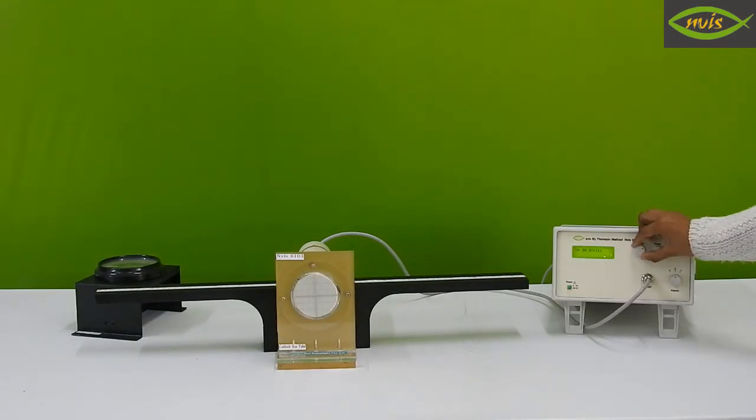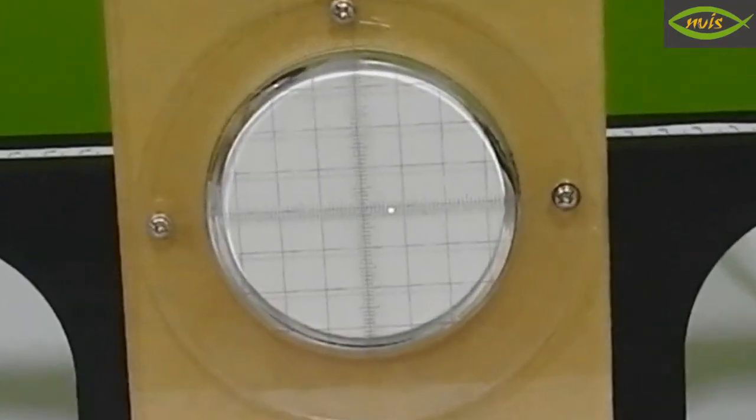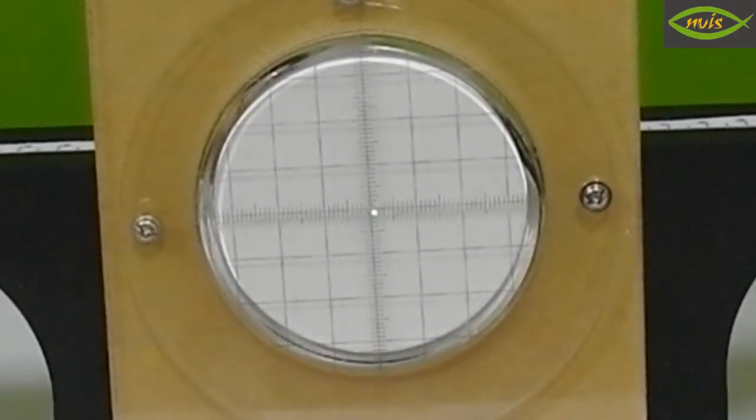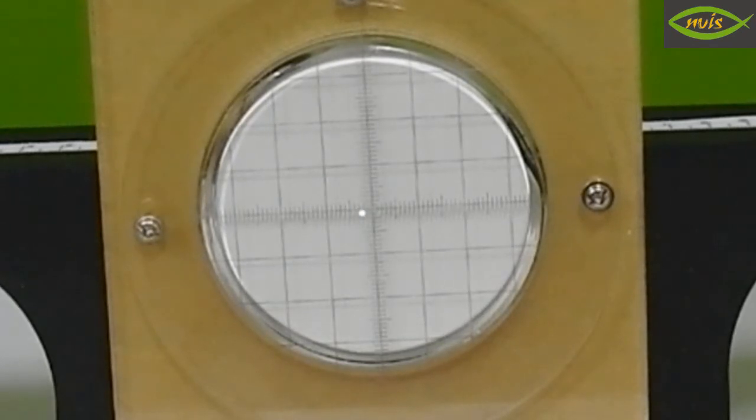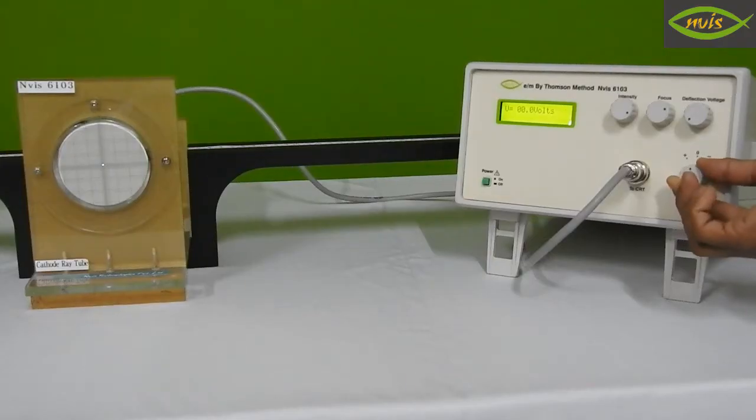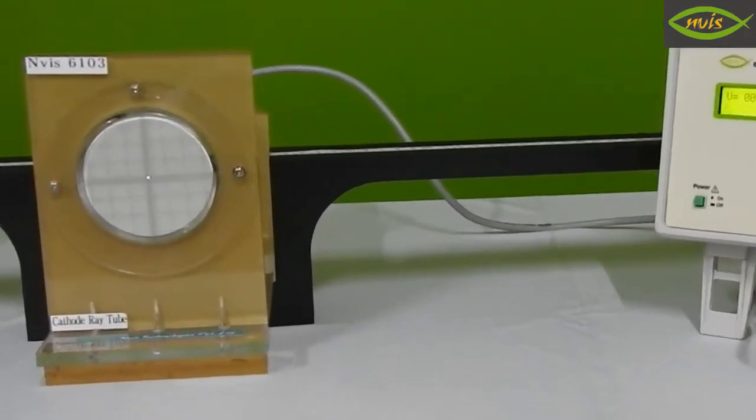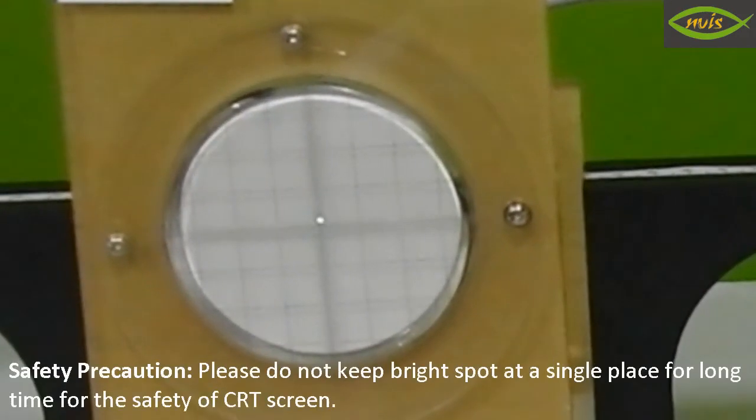Adjust intensity and focus controls to obtain sharp spot. Bring the spot at the middle position of CRT with the help of X-plate deflection which is given at the back side of the instrument. Set polarity selector to plus position and adjust deflection voltage to deflect the spot 1 cm away towards upward. Note the deflection voltage as V1.